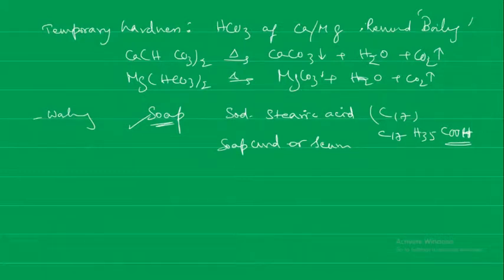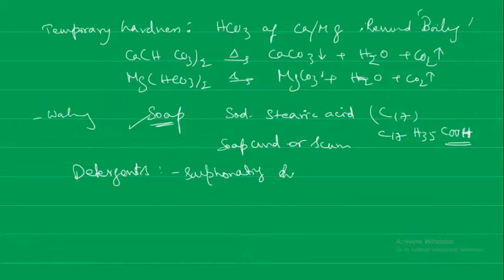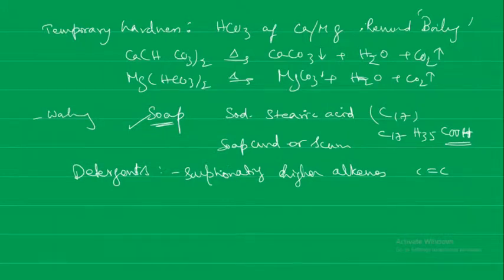For better washing purposes, instead of soap, detergents are used. Detergents work even with hard water and are used in place of soap in domestic and laundry work. They are made by sulfonating higher alkenes (which have carbon-carbon double bonds) with sulfuric acid and then converting them to the sodium salt using caustic soda. Detergents are more soluble in water than soap and are unaffected by the hardness of water — in that way they are better than soap.